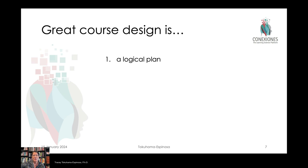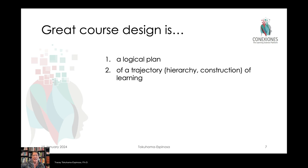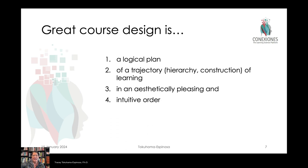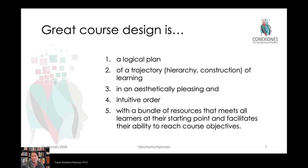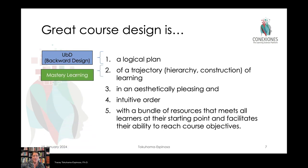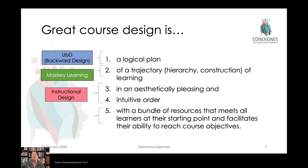The punchline is that great course design involves a logical plan, a trajectory, or a hierarchy — a construction of learning objectives. It is a design that is pleasing, easy, and intuitive for the learner, and that has resources that can help differentiate amongst the different kinds of needs that your students have. This means we have to think about understanding by design initially, then mastery learning, then instructional design, and ultimately universal design for learning.